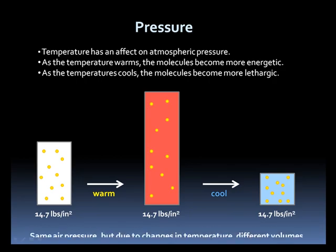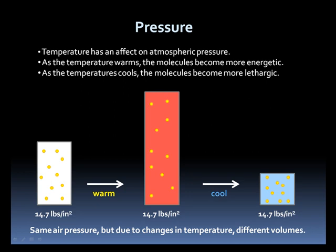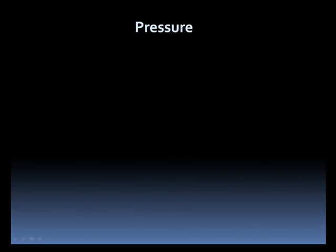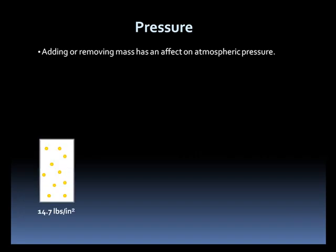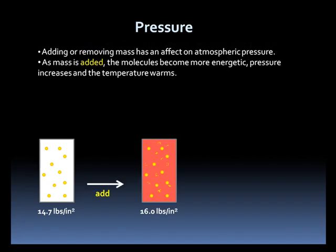So, same pressure, but different volumes because of the temperature change. Adding mass or removing it also has an effect on pressure. If we add mass to this column but keep the volume the same, the air pressure increases while the temperature also increases due to more molecular interaction.